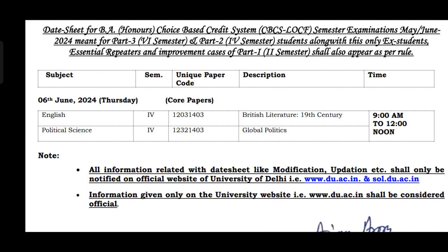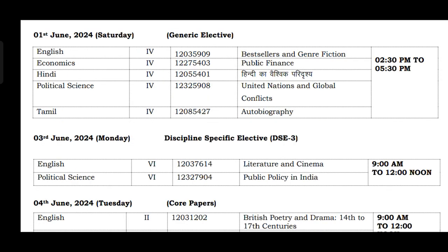Dear students, you are requested to check out the past year question paper videos for all three core papers — check once what type of questions, unit and theme wise, have been asked, and which units are important. You can gauge this yourself. If we talk about your generic elective papers, the paper is scheduled for 21st May 2024.